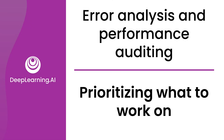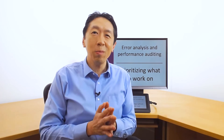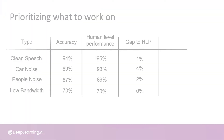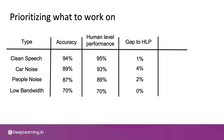In the last video, you learned about brainstorming and tagging your data with different attributes. Let's see how you can use this to prioritize where to focus your attention. Here's the example we had previously with four tags and the accuracy of the algorithm, human level performance, and what's the gap between the current accuracy and human level performance.